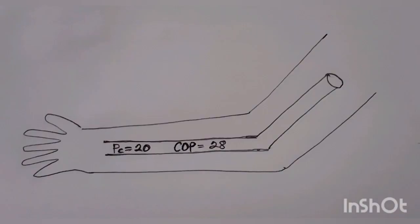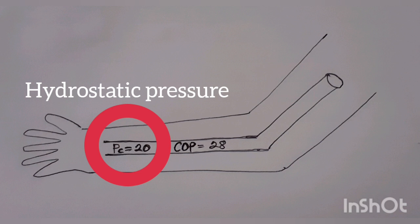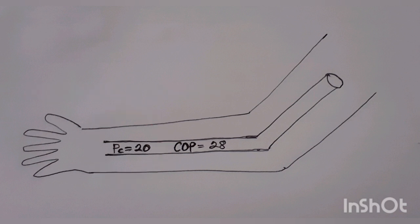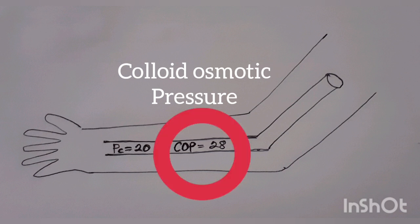The direction and rate of fluid exchange between capillary blood and interstitial fluid is determined in part by the balance between the hydrostatic pressure, denoted by PC in the capillaries, which promotes the movement of fluid out of capillaries, and the colloid osmotic pressure of plasma, denoted by COP, which favors the movement of fluid into the capillaries.